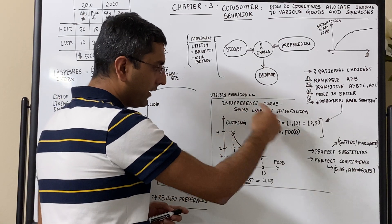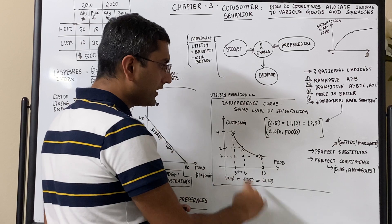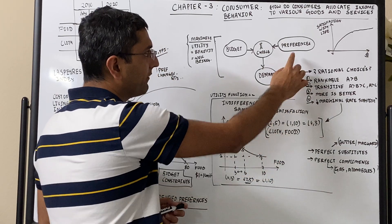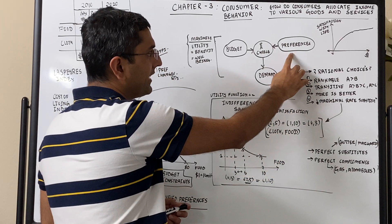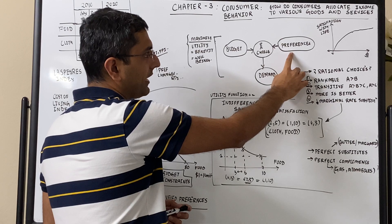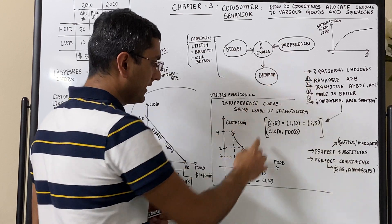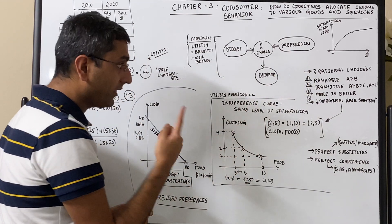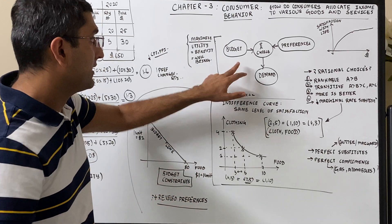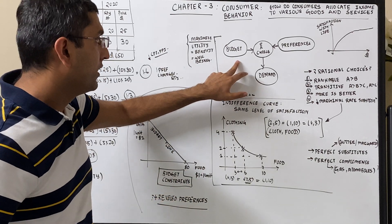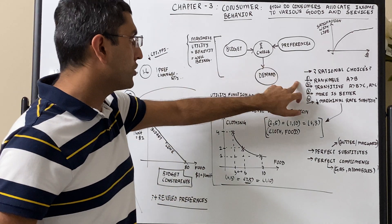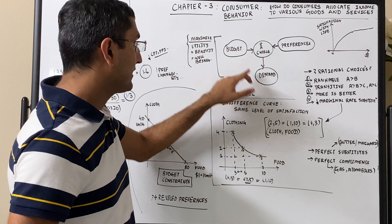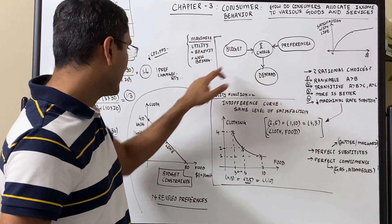You cannot just live without food and buy only clothing — there are bare minimum requirements for certain goods. Drawing these two variables, you can start plotting various other preferences and get a clear idea of what preferences your consumer has. These preferences change based on the budget, which is the second part. So we've understood choices and preferences — now let's look at the budget.